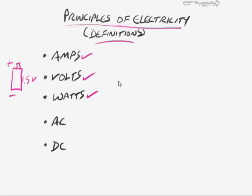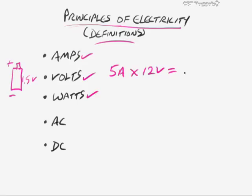Watts on its own is kind of a dead term — it has no relevance until you also understand amps and volts. For example, if you have something that is capable of 5 amps and you need an electrical difference of 12 volts, you multiply 5 amps times 12 volts to get 60 watts. So all you have to do is multiply amps times volts to come up with the number of watts that you have or need.